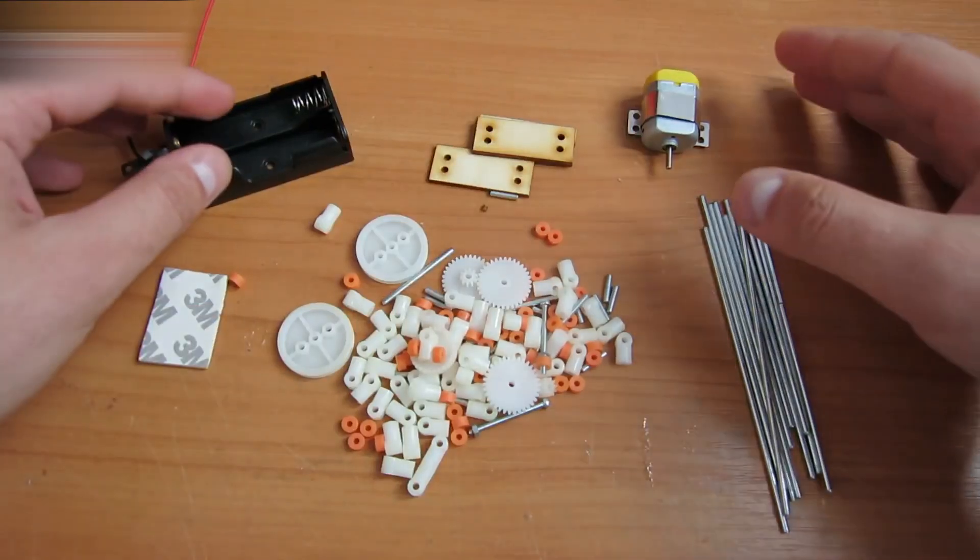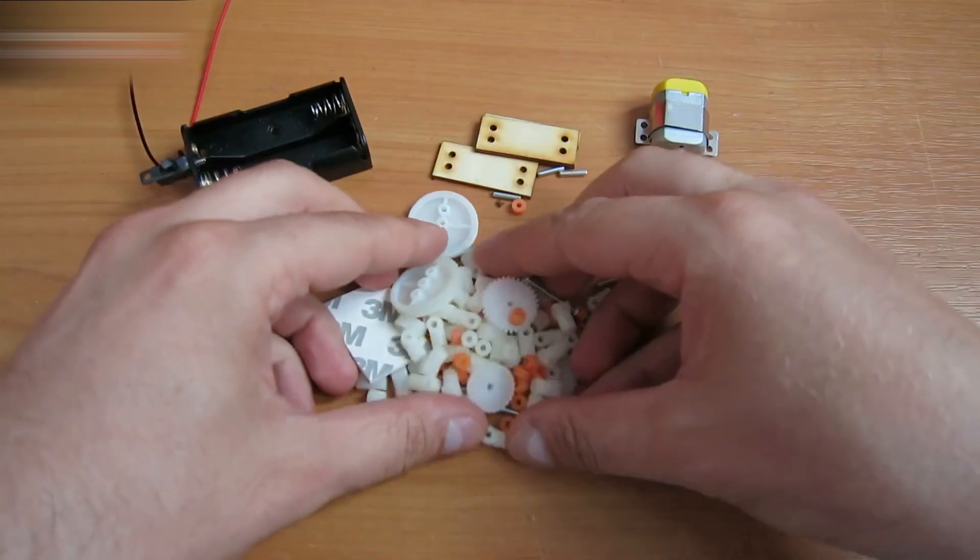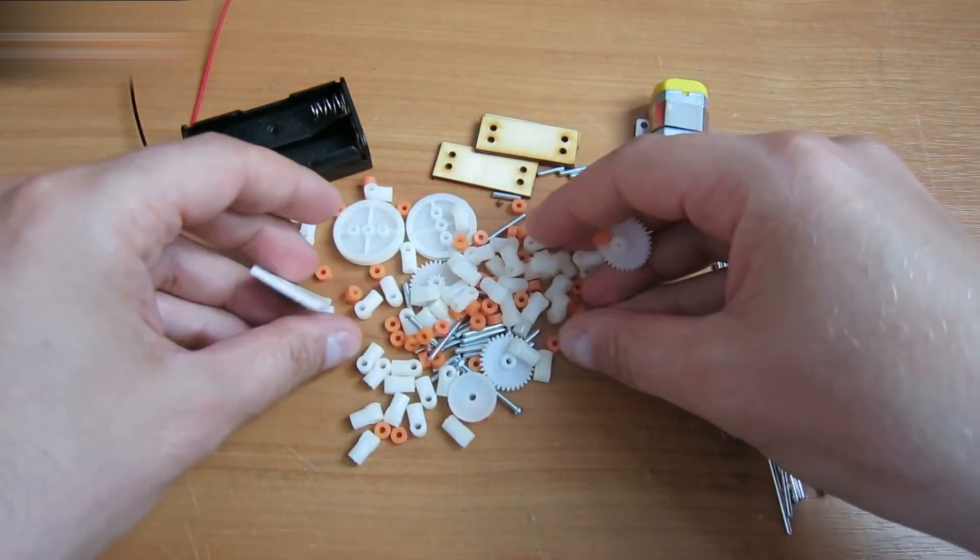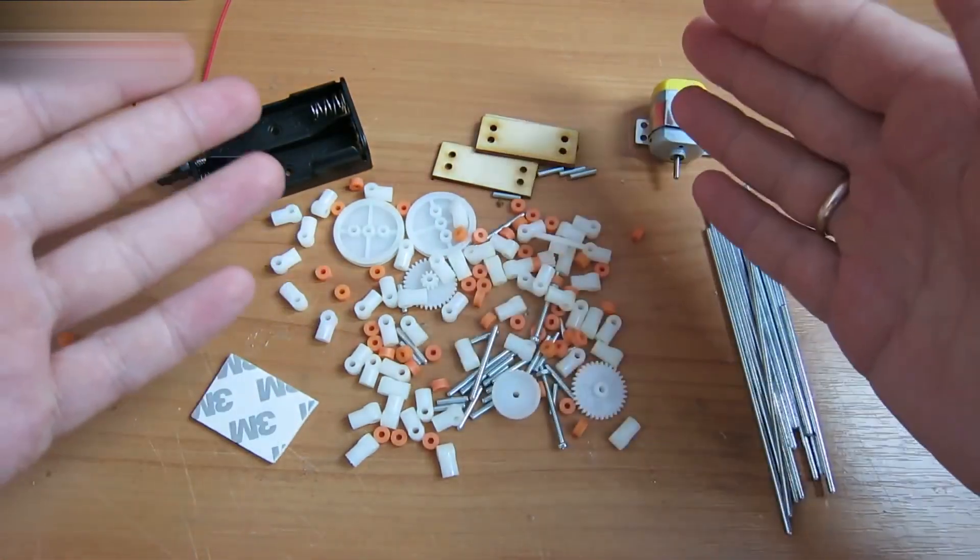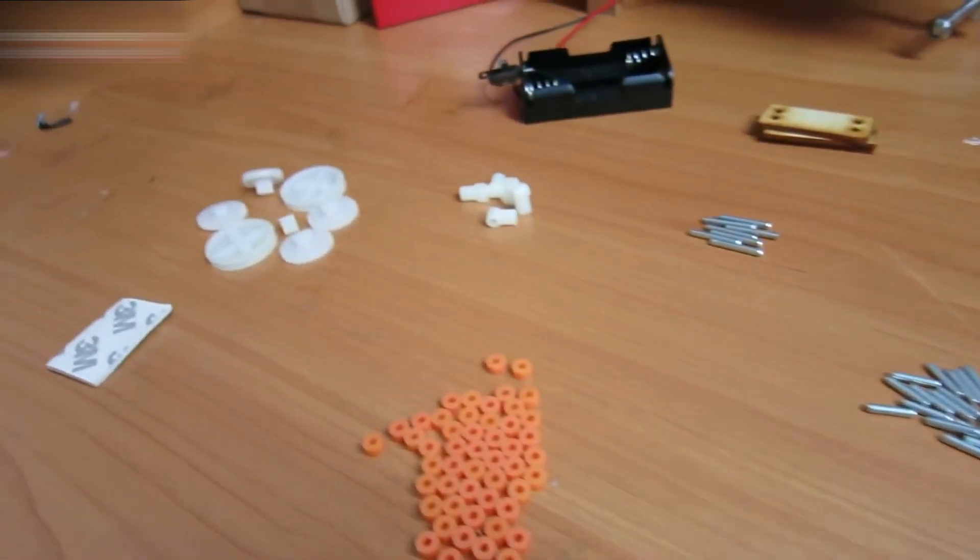Hi everybody! Today we will assemble a robot with four legs and a motor. Here are all its parts. This kit is very interesting for me. That's why I decided to assemble it. There is a link to a web page with an instruction manual in the video description section.